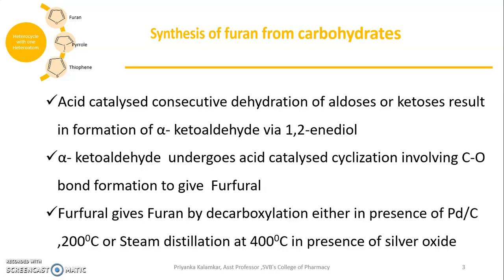Acid-catalyzed consecutive dehydration of aldoses or ketoses results in formation of alpha-keto aldehyde via 1,2-enediol. Then, alpha-keto aldehyde undergoes acid-catalyzed cyclization involving formation of a new C–O bond to give the furfural molecule. Furfural further decarboxylates either in the presence of palladium-activated charcoal at 200°C or by steam distillation at 400°C in the presence of silver oxide.